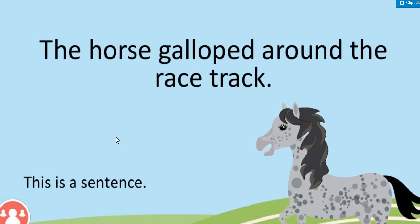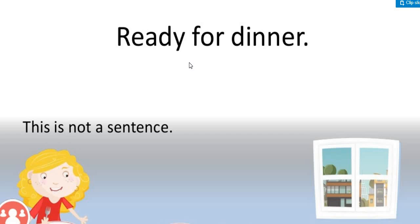'The horse galloped around the racetrack.' Yes, this is a sentence. It has a meaning, it is meaningful, and it has a subject and a verb. 'Ready for dinner.' — Who's ready for dinner? Who are you talking about? There is no subject in here, so this is not a sentence.